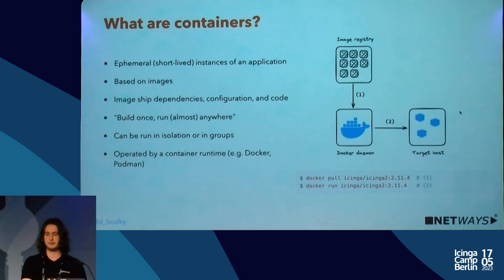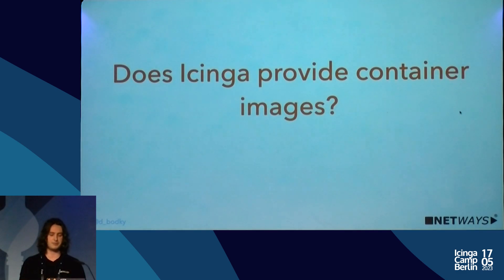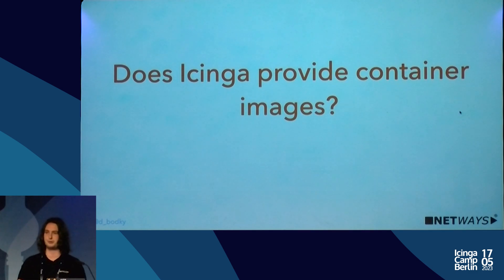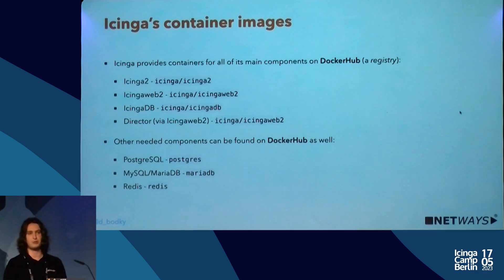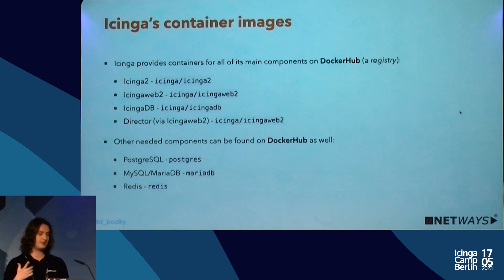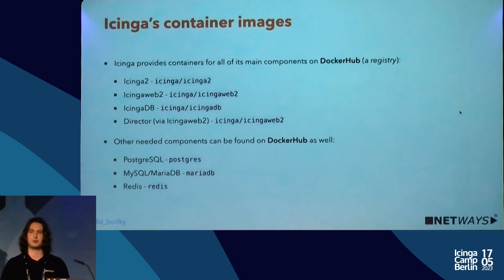Does Icinga provide container images? Yes — Icinga provides images not only for Icinga 2 core but for every official component: Icinga Web, Icinga DB, the Director, and other modules which come with their own daemons. For those daemon-based modules, you can use the Icinga Web image as well. Icinga chose to publish them on Docker Hub, which is still the most common image registry, though others like GitHub, Google, and Red Hat are catching up.